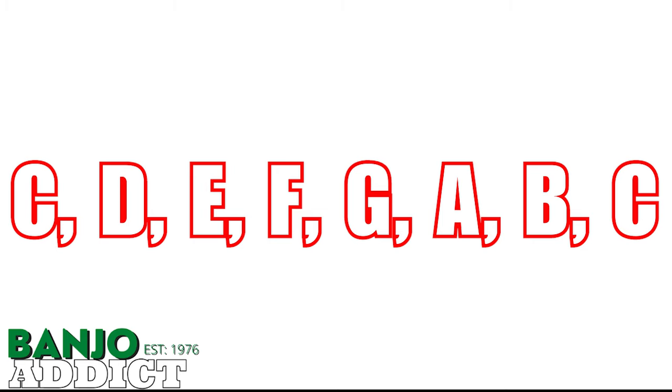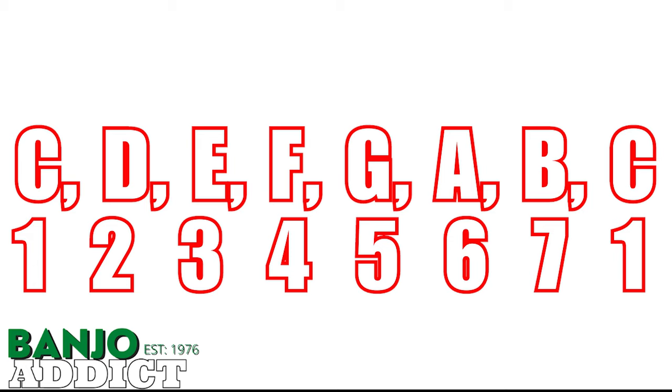starting with C is 1, D is 2, E is 3, F is 4, G is 5, and A is 6, B is 7, and C would either be back to 1 or you can continue on with 8. So that would tell us that the A is the sixth note in the C major scale, and that is the C major's relative minor.